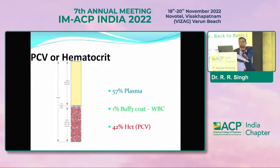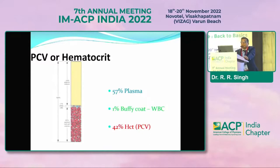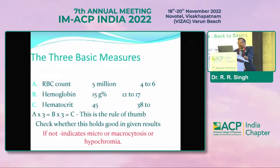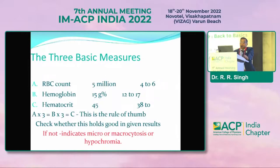When we centrifuge a blood sample, in a normal sample the upper 57% is straw-colored plasma containing most of the platelets. There is a buffy coat of around 1% which carries WBCs, and the lower 42% is the packed cell volume, chiefly containing RBCs. The rule of three: if the RBC count is 5 million, hemoglobin should be 15 g% and hematocrit should be around 45.